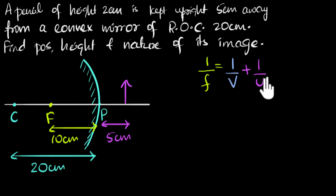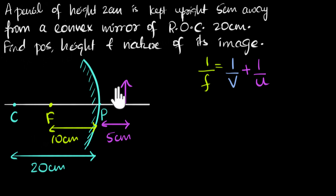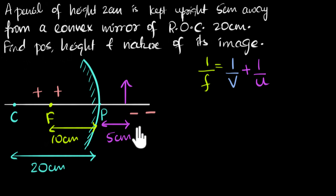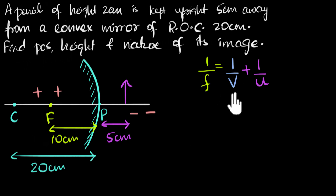This formula is sign sensitive, so the next step is to understand the signs. We treat this as a graph sheet, calling the pole our origin. We choose the incident direction to be positive — that's towards the left, since the object is here and the mirror is over here. So all positions to the left side of the pole are positive, and all positions to the right side are negative.